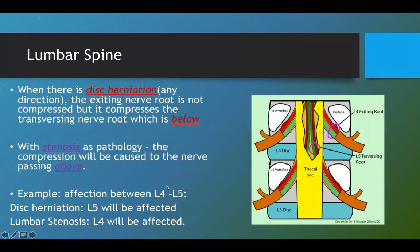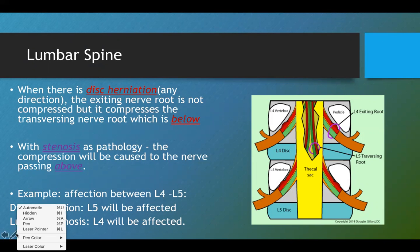Now if we discuss the same issue at the lumbar spine, the two different pathologies will have two different affections, and there is a reason why. In disc herniation, the nerve root that gets affected and compressed is not the exiting nerve root but the traversing nerve root. In this picture, at L4–L5, L4 is the exiting nerve root but L5 is the traversing nerve root.